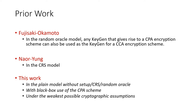The Naor-Yung encryption system almost gives such a process in the CRS model. But in this work, our focus is on the plain model without setup, CRS, or a random oracle. We also aim to make black box use of the underlying CPA scheme, and in fact we end up making black box use of all other cryptographic assumptions as well, with a goal of making the weakest possible cryptographic assumptions.